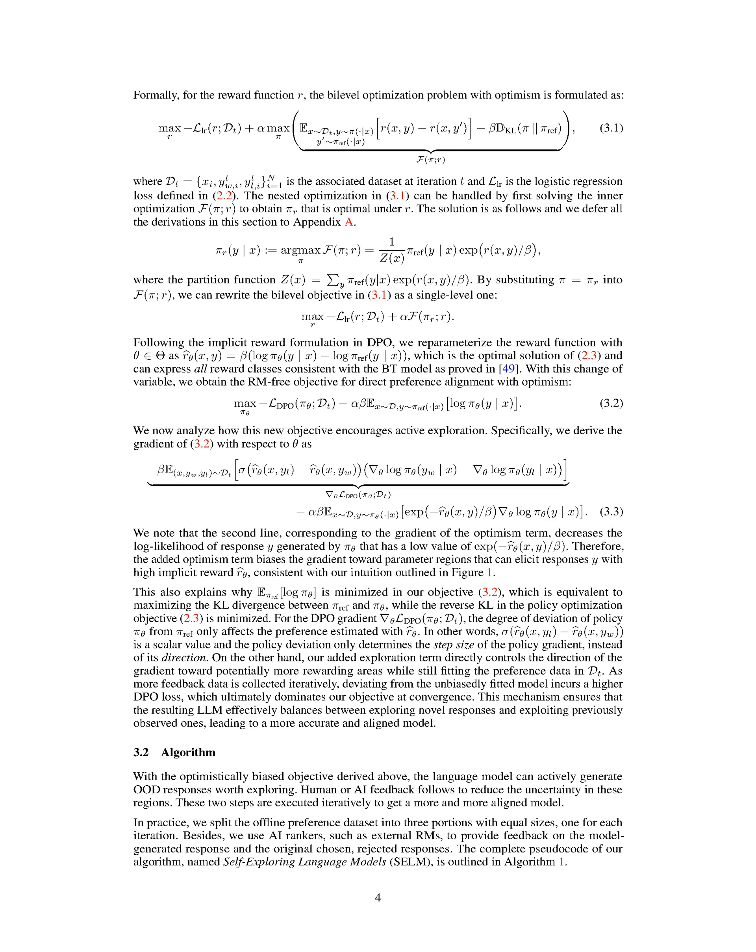Analyzing the gradient with respect to the reparameterized reward function, we observe that the added optimism term guides the gradient towards rewarding areas. This mechanism ensures that the LLM strikes a balance between exploring new responses and exploiting known ones, leading to a more accurate and aligned model as more feedback data is collected. By replacing the optimistic bias term and incorporating a KL divergence loss between the policy and a reference policy, the optimistic reward model encourages responses with high potential unknown to the reference policy while minimizing deviation.